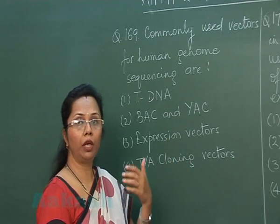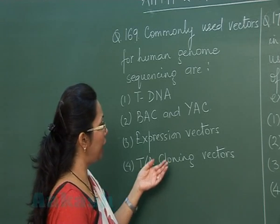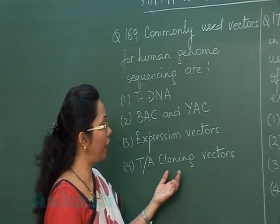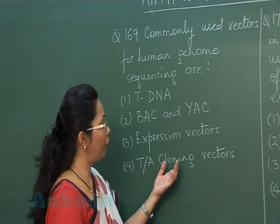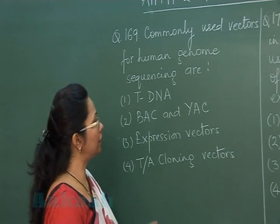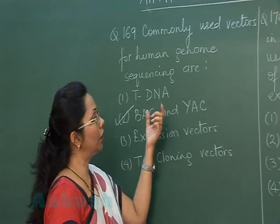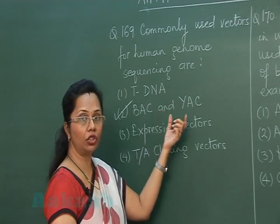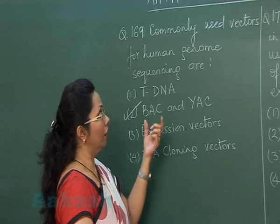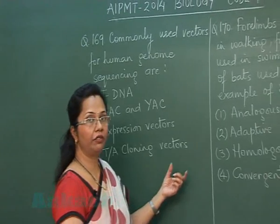Expression vectors are those which transcribe a protein in the host cell, and TA cloning vectors are those which are first cloned using Taq polymerase and then transferred into the host cell. In this case, the answer is BAC and YAC, because these are quite large vectors with larger carrying capacity, making them best for sequencing the human genome.